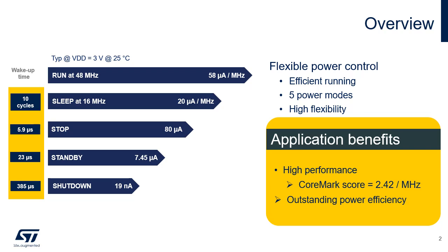STM32C0 devices feature a power control unit designed to increase flexibility in power mode management and further reduce the overall application consumption. Run mode can support a system clock running at up to 48 MHz with only 58 µA per MHz. STM32C0 devices support five main power modes: Run, Sleep, Stop, Standby, and Shutdown modes. The high flexibility in power management provides both high performance with a CoreMark score equal to 125 at 48 MHz, together with an outstanding power efficiency.